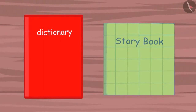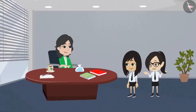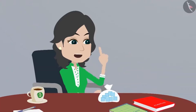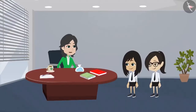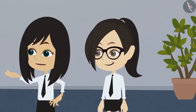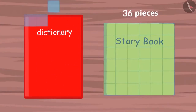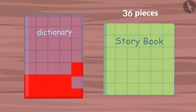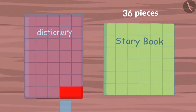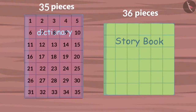The book is completely covered with square-shaped pieces. We now know that 36 pieces are required to cover this book. Now measure the other book in the same way. Place the square-shaped pieces on the other book so that no piece is placed on top of another. How many pieces did you need to cover this book? We used 35 pieces to cover this book.